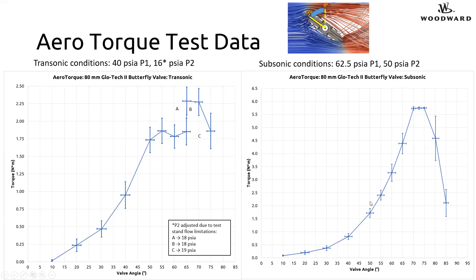The subsonic conditions used for this study were an inlet pressure of 62.5 PSI and an outlet pressure of 50 PSI, which generated the torque curve on the right. For clarity, a zero degree valve angle represents the plate in the closed position — the low flow condition for the valve — and it opens up towards 80 to 85 degrees for maximum flow at the upper end of the valve range.